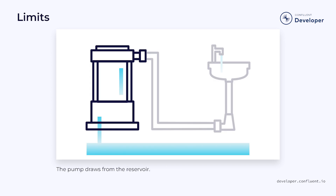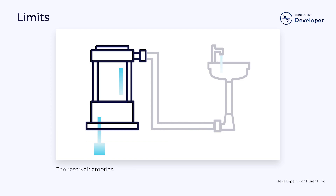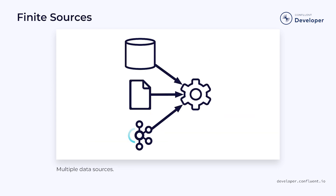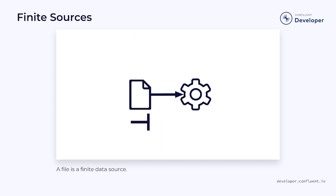Let's go back to our plumbing analogy for a moment. Imagine our water pump is drawing water from a reservoir. Reservoirs typically have a limited supply of water. Once we've drawn all the water, our stream will stop flowing. Data streams might have similar limitations. If we draw data from a file, when we reach the end of the file, the stream will terminate. We refer to this as a finite data source.